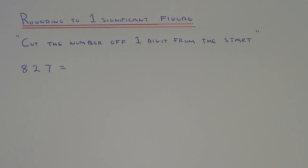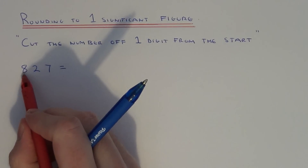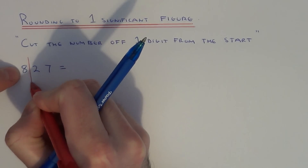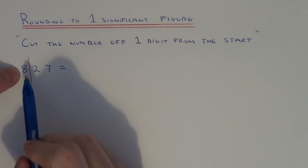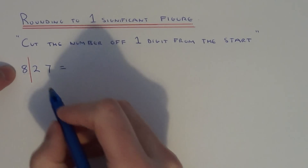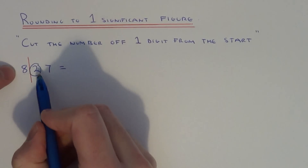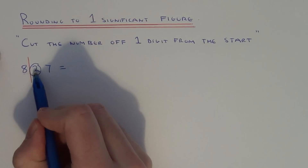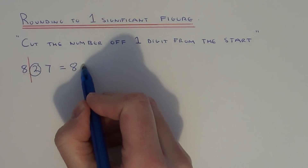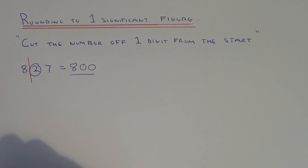When rounding a number off to one significant figure, basically all you need to do is round it one number from the start of the number. So in this example with 827, we're going to put a line in one number from the start. We're either going to leave it as 8 if we round down, or round it up to 9. Look at the next digit to decide — the next digit is a 2, so we round it down because it's less than 5, so we leave it as 8. All we need to do now is fill in 0's for the remaining digits, so our final answer is 800.